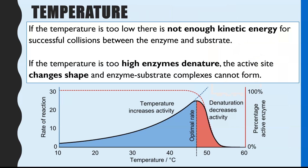Condition number one is temperature. If the temperature is too low, there's not going to be enough kinetic energy for the substrate and enzyme molecules to move fast enough to have successful collisions between the enzyme active site and the substrate. Therefore, you end up with fewer enzyme-substrate complexes, and that's why we can see the rate is lower at cooler temperatures.